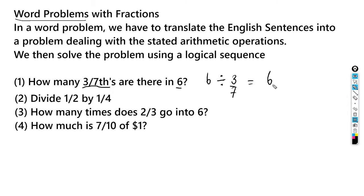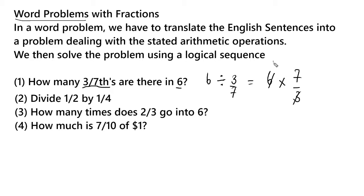When we're dividing, we're going to end up with six multiplied by seven over three. I'm going to cancel the three and the six — I get two, and two times seven gives me 14. That's the answer for number one.